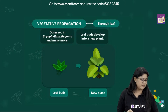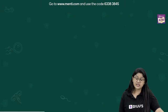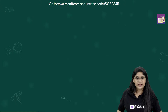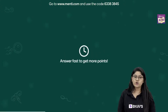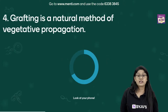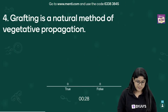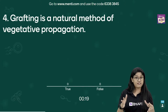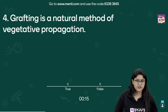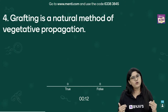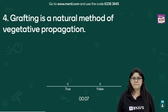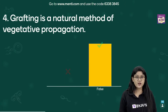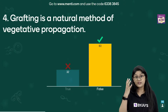Question three is done — the leaderboard can come anytime as a surprise! Moving to question number four: Grafting is a natural method of vegetative propagation — True or False? Very easy question! I can already see answers in the chat.